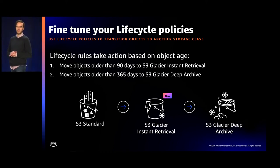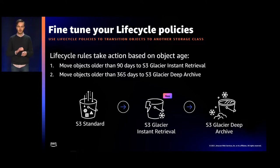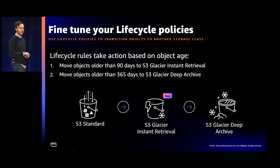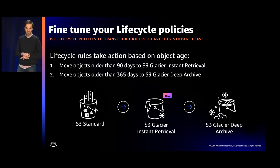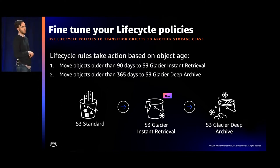S3 lifecycle policies are rules you set up to move objects to another storage class after a given number of days. These rules are based on the creation date of the object and can be set at the whole bucket, a prefix, or just tagged objects. Take a typical medical imaging workload — when an image is generated, it's frequently accessed for a short period by the radiologist, practicing physician, and technicians. After a period of time, that image is likely rarely accessed again — perhaps for a patient visit or if a radiologist needs to review prior history. But when they want their data back, they need it immediately. You can move data from S3 Standard to S3 Glacier Instant Retrieval after a period of time, and then further optimize cost by moving to S3 Glacier Deep Archive.